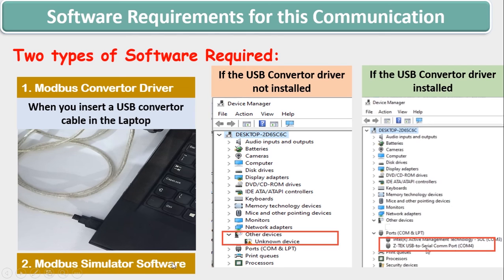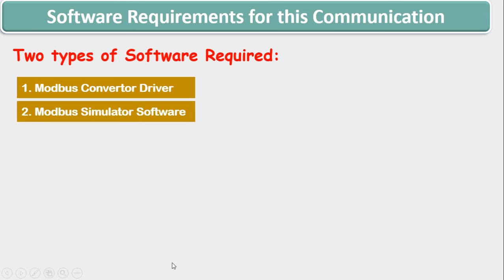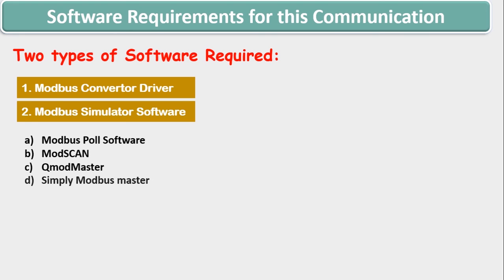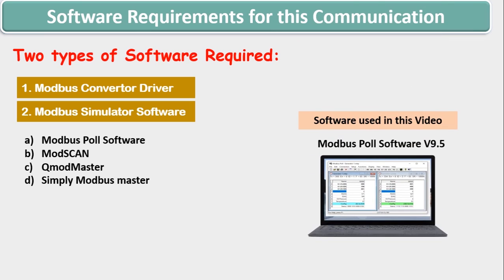Once the driver is installed correctly, you can move to the second type of software — that is, Modbus simulator software. There are many types of simulator software which can be used for checking Modbus values. The most commonly used Modbus simulator software are Modbus Poll, ModScan, QModMaster, and simply Modbus Master. The software we are using in this video is Modbus Poll software version 9.5. I have downloaded this software from PLC247.com and I am sharing the download link of this software in the description as well.